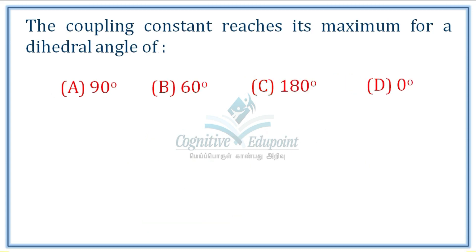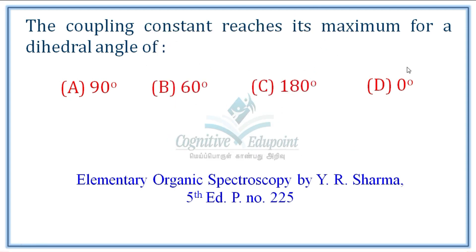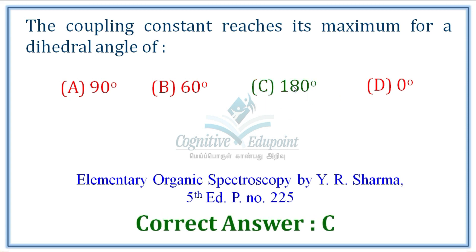Next question: The coupling constant reaches its maximum for a dihedral angle of? The coupling constant is maximum at 0°, slowly decreases at 90°, and increases again. It is maximum at both 0° and 180°, but the highest value occurs at 180°. The most appropriate answer is 180 degrees.